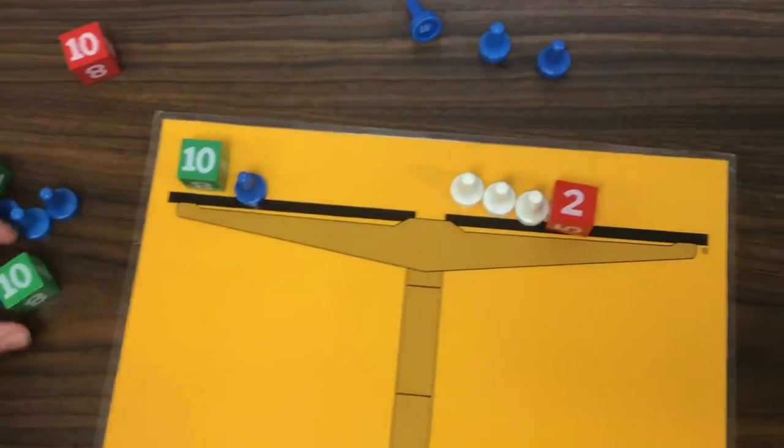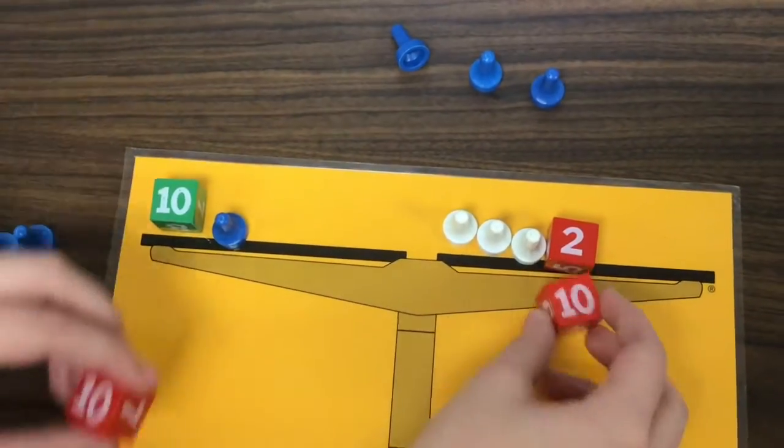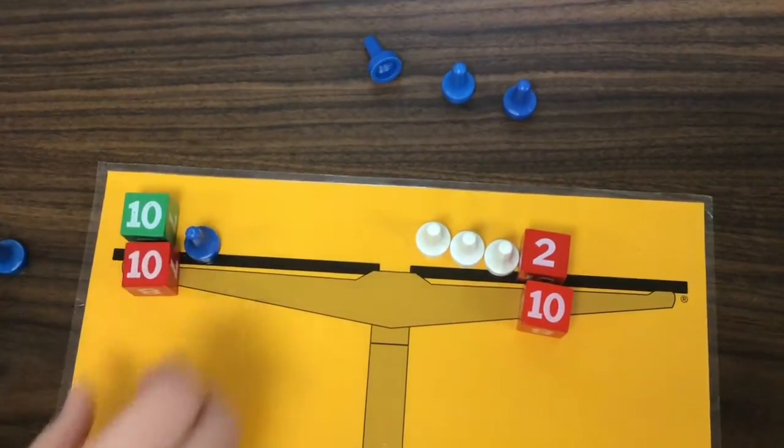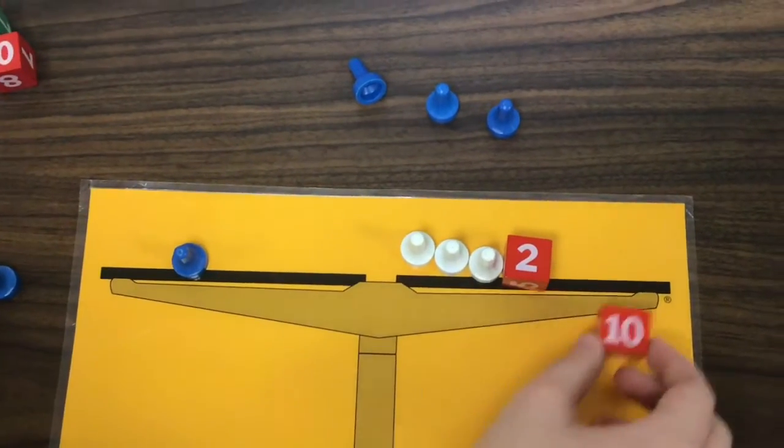So I have the problem set up, and to do this, I could add a positive 10 to both sides. And then you take this away because this equals 0, and then this would equal 12.